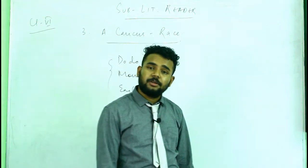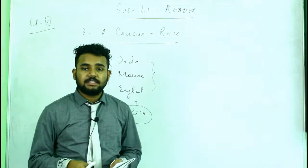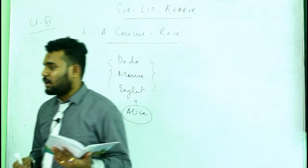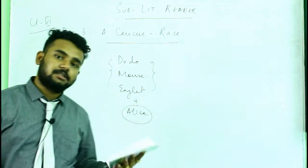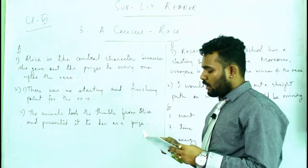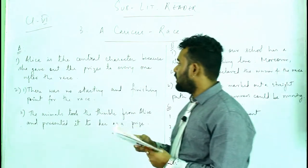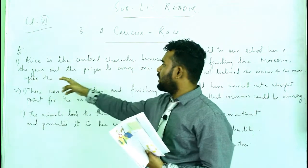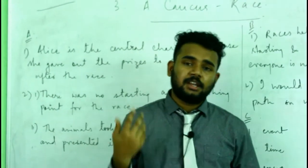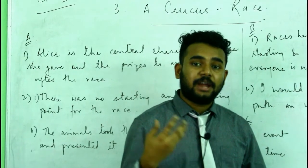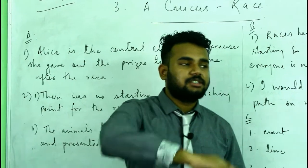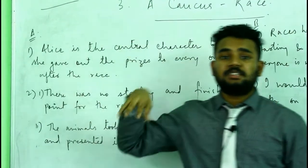They all started playing together and that was a happy ending to the story. Now in the next session we discuss question answers. The first question: who is the central character in this episode? Alice is the central character because she took the initiative and gave out the prizes — comfit — to everyone.